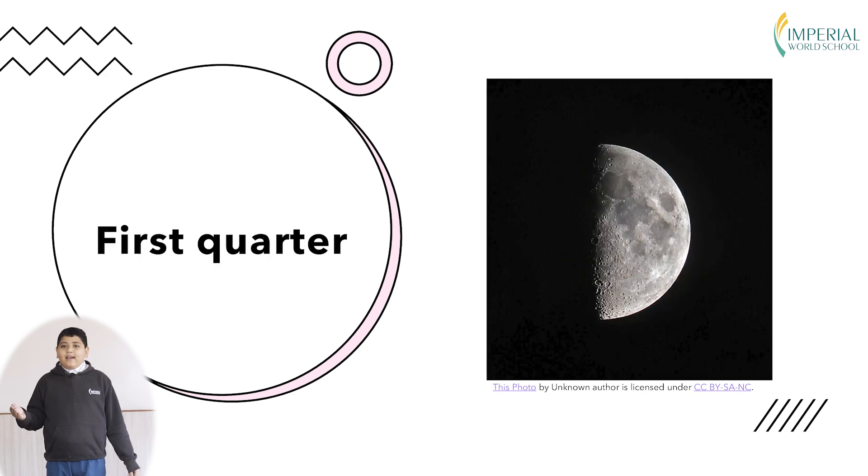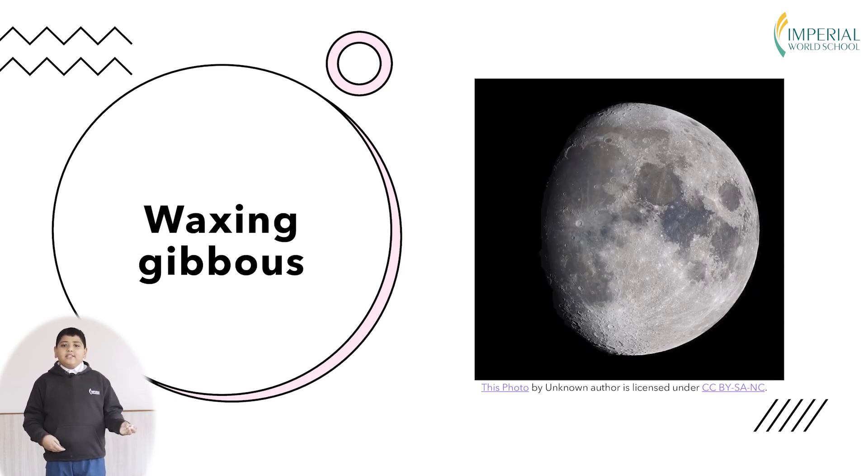Then we have the first quarter where we can see about half of the moon. Then we have the waxing gibbous where we can see a little bit more of the moon than half.